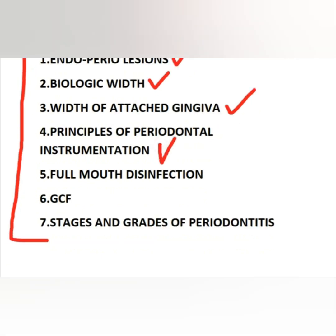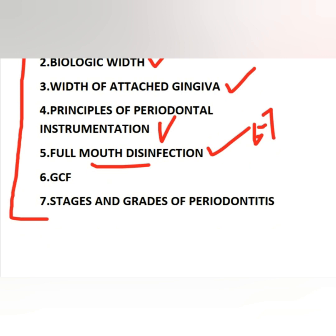The fourth topic is principles of periodontal instrumentation — grasps, wrist movement, patient positioning, operator positioning, instrument angulation, and sharpness of instruments. The fifth topic is the full mouth disinfection protocol; there are six to seven steps given by Quirynen. It may be a little confusing but once you revise it two to three times it becomes easy.